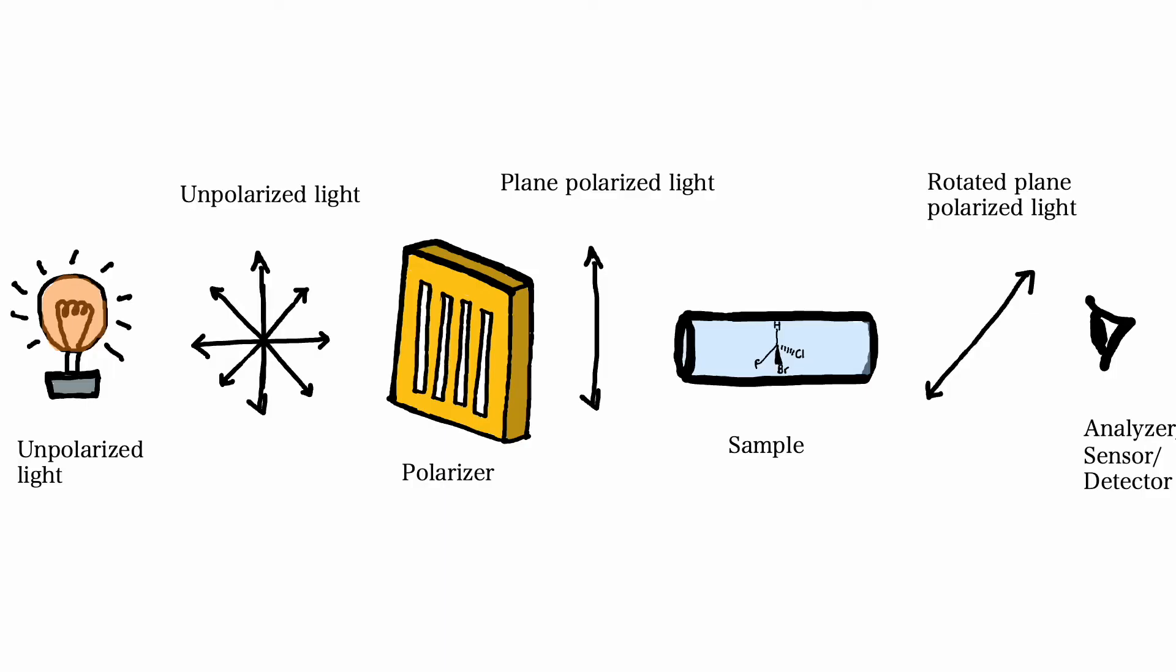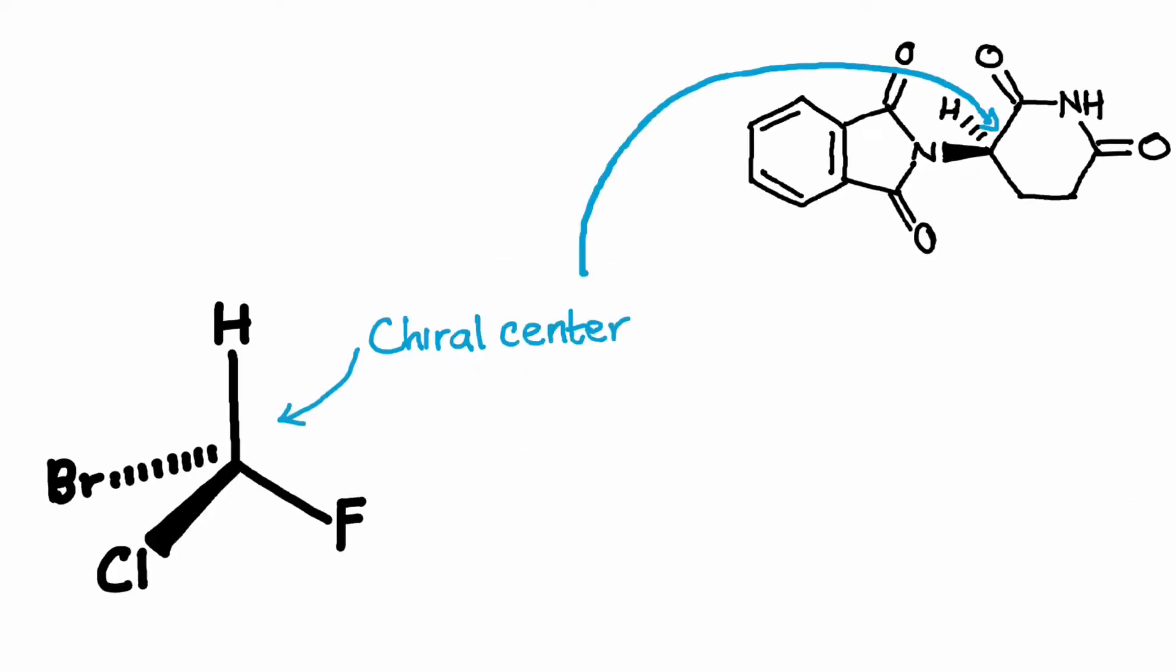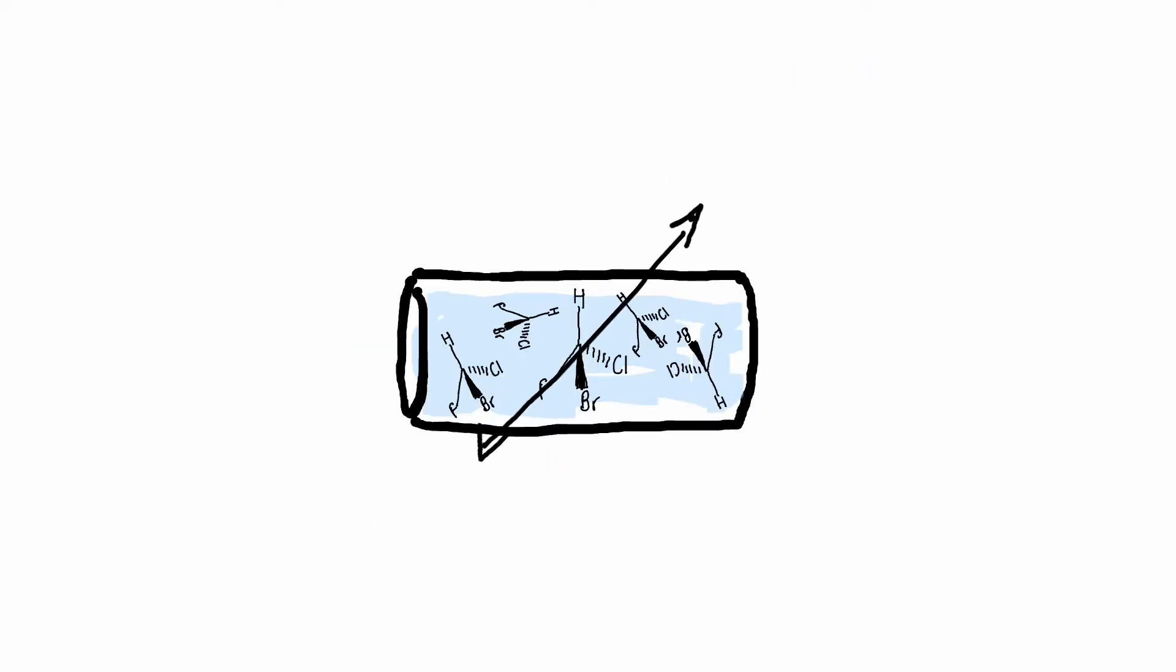A polarimeter is an instrument used to measure the optical rotation of plane polarized light. Optically active substances such as chiral compounds rotate plane polarized light.